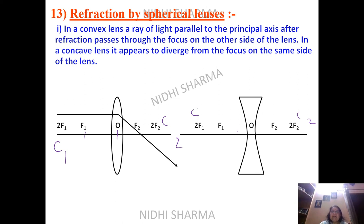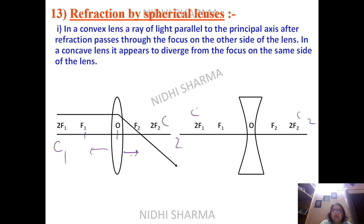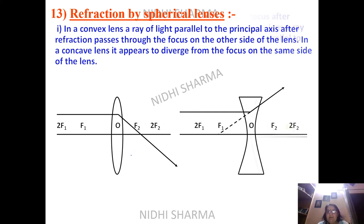Both sides have double focus because the lens has two different spherical edges. For a convex lens, rays converge directly to focus. For a concave lens, the rays diverge and meet virtually. This completes rule number one.